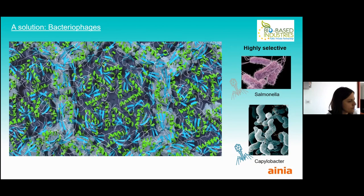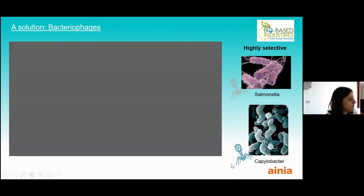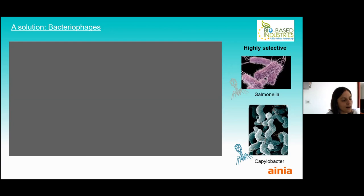The important thing about bacteriophages is that they are very selective: a bacteriophage that can detect Salmonella will not affect, for example, Campylobacter, and vice versa. This is the same with any other bacteria or cell type, which is why they are not harmful to humans and are useful specifically for attacking a single kind of bacteria that may cause food safety problems.